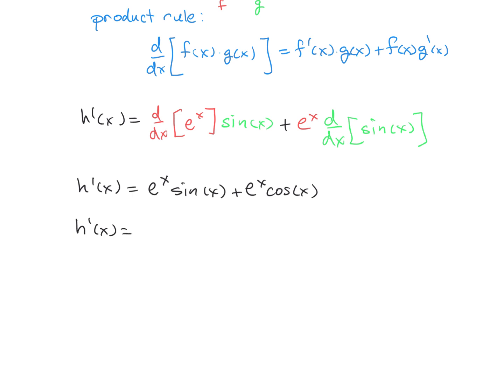People find it very helpful to often factor these if possible, so that's e^x times the quantity (sin(x) + cos(x)). And that is the derivative of our function h, using the product rule.